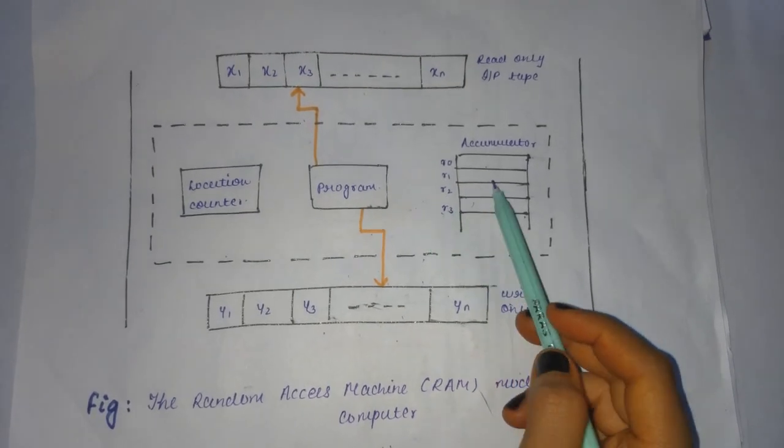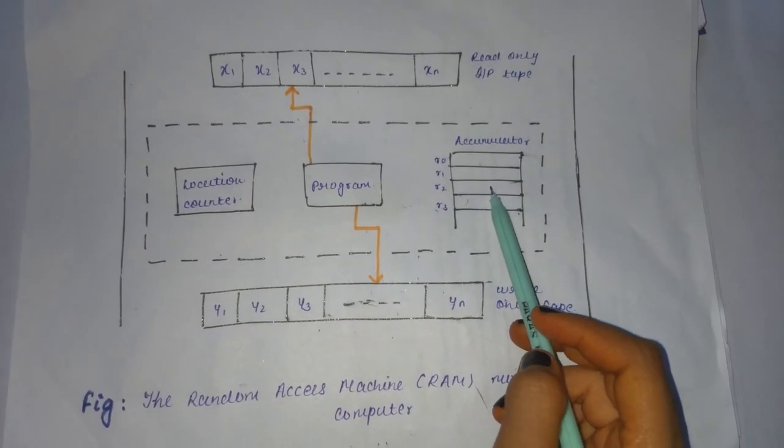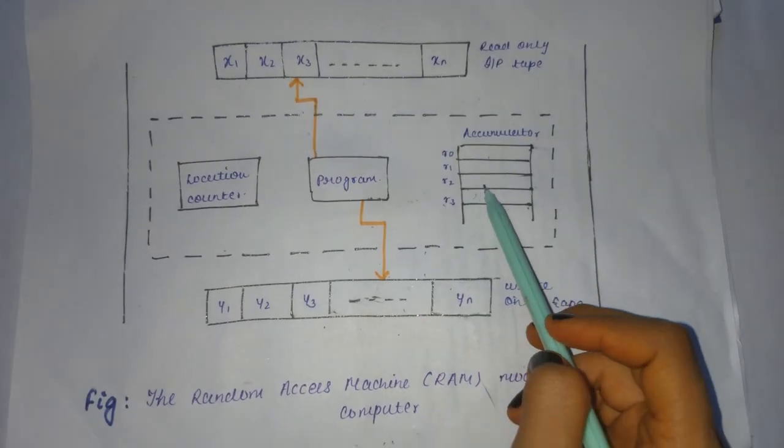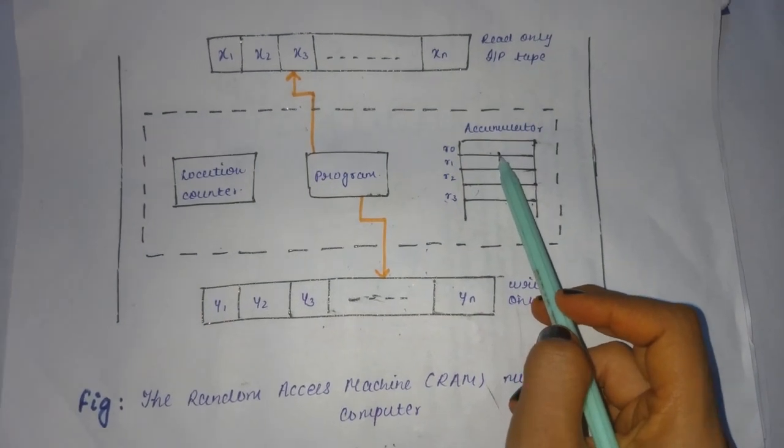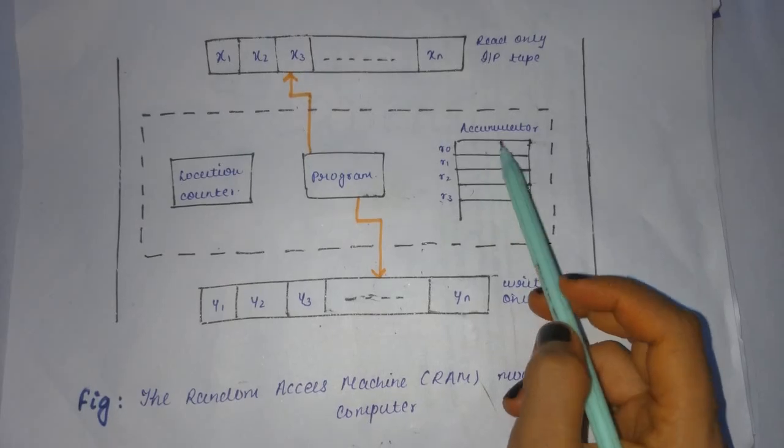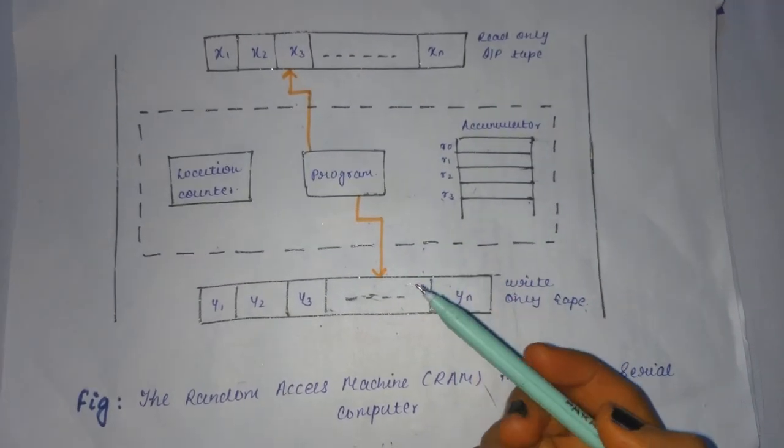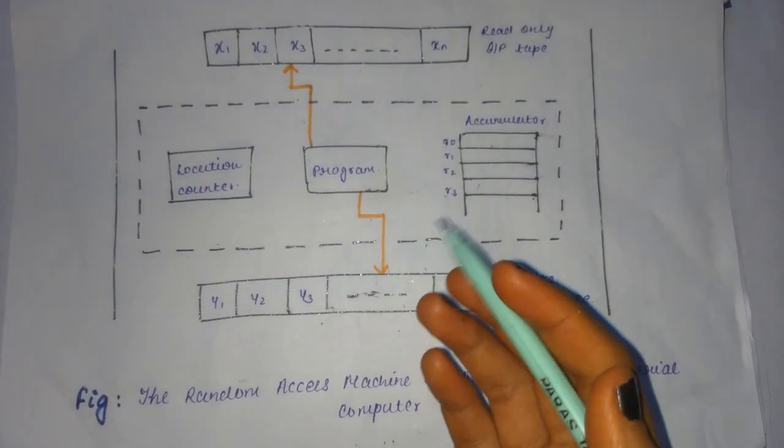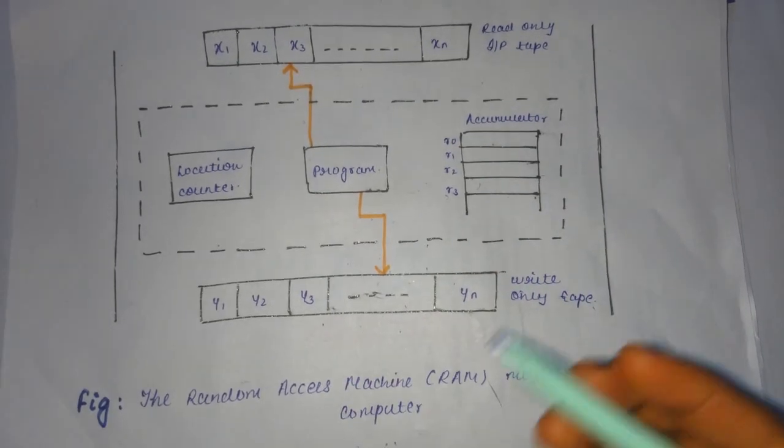And all the computations are performed over here only, and the combination of all this is known as accumulator. Every time execution starts only with the first instruction and proceeds forward with the program order.